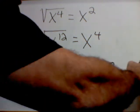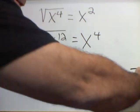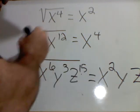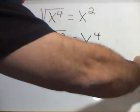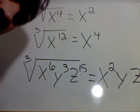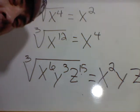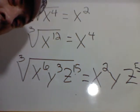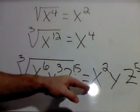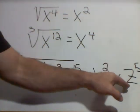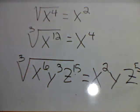Now, on the z's, 15 divided by 3 gives me 5. So, final answer, x squared, y, z to the 5th. Now, I'm going to do a few that involve numbers and variables.